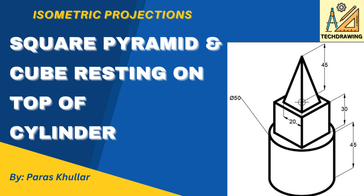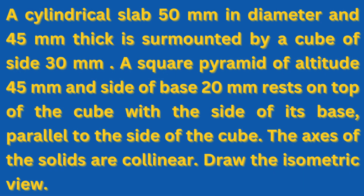Hello students, in this video we will discuss the isometric projection of a combination of three solids. There are three solids: one is a cylinder, above the cylinder a cube is resting, and above that cube a square pyramid is resting. Let us read the question: a cylindrical slab of 50 mm in diameter and 45 mm thick is surmounted by a cube of 30 mm.